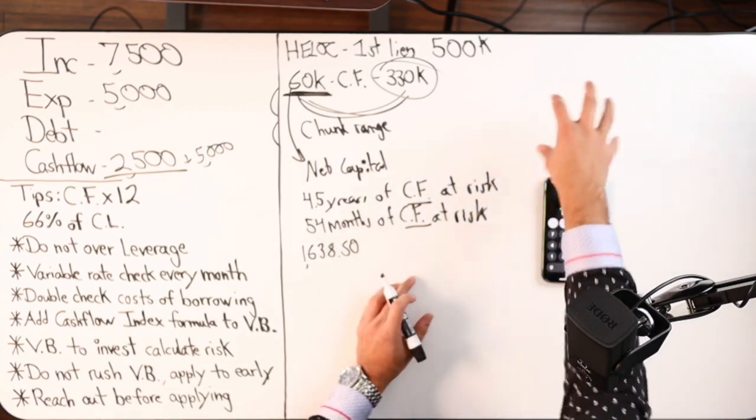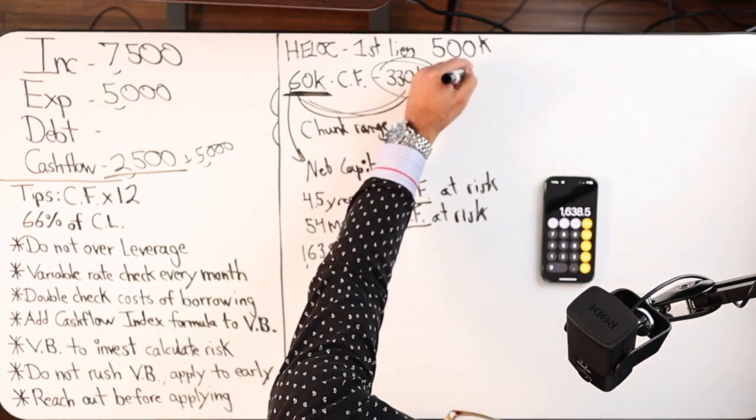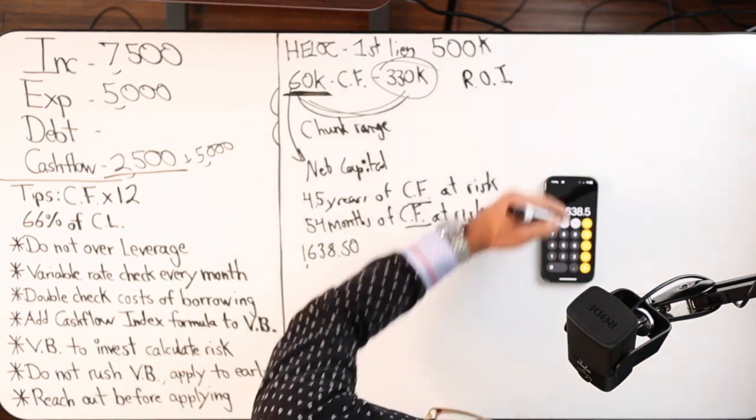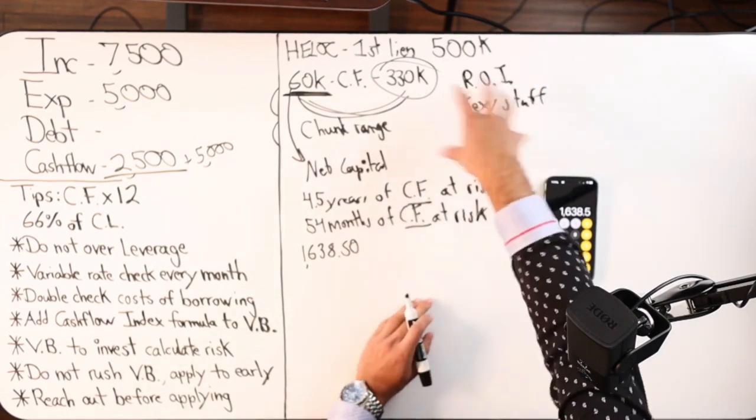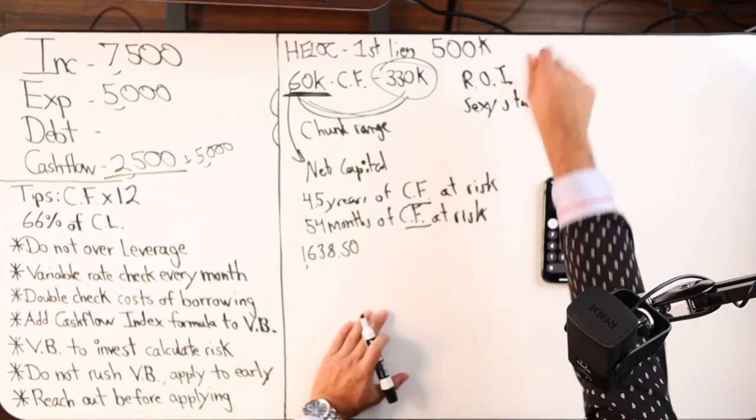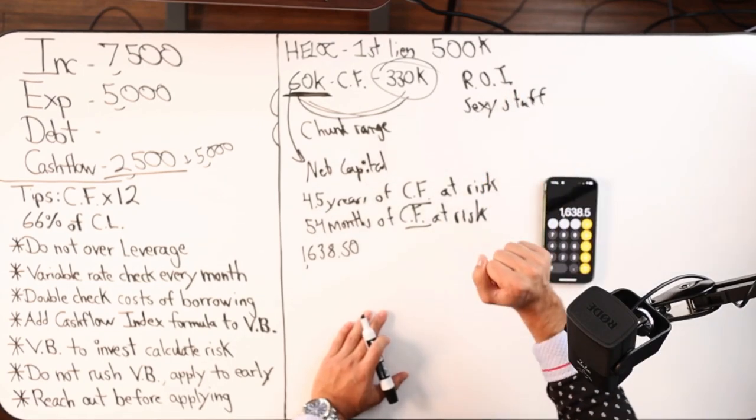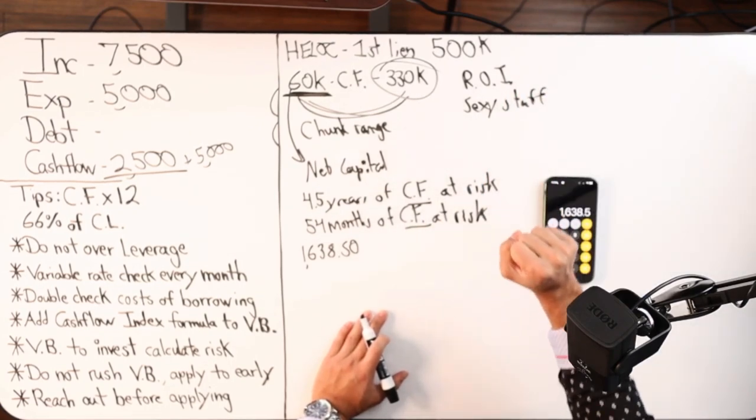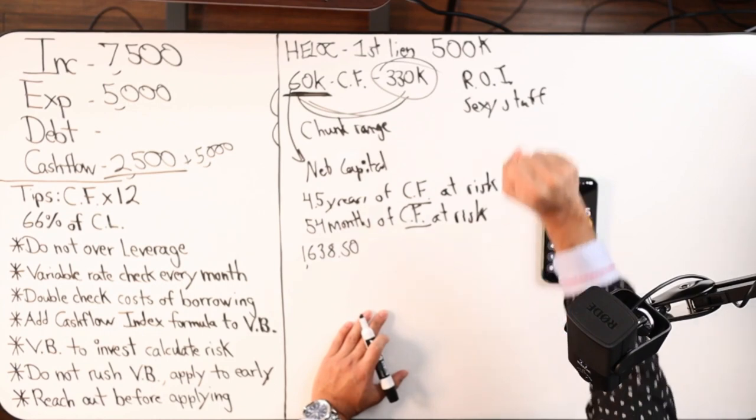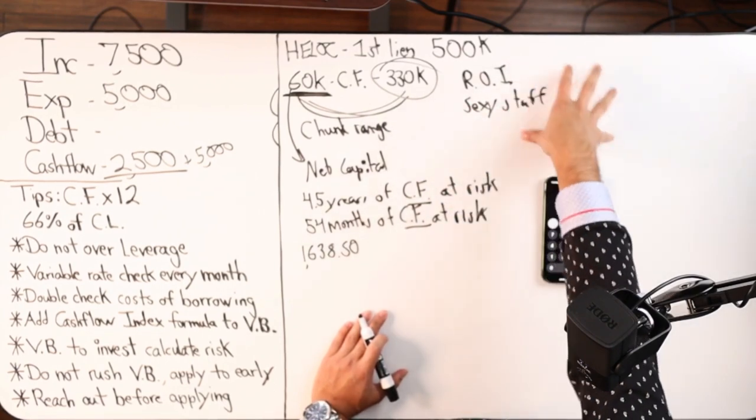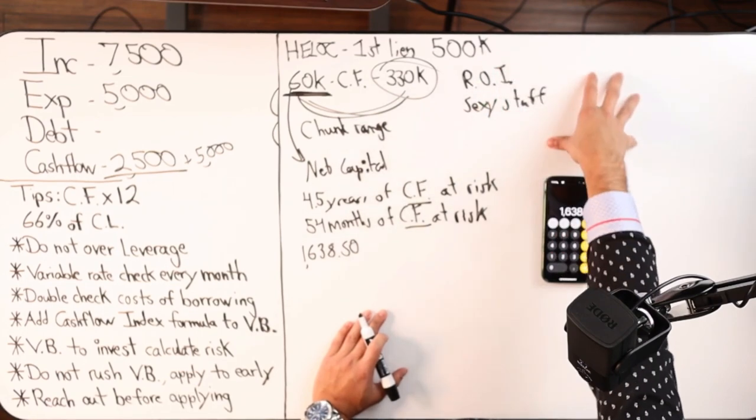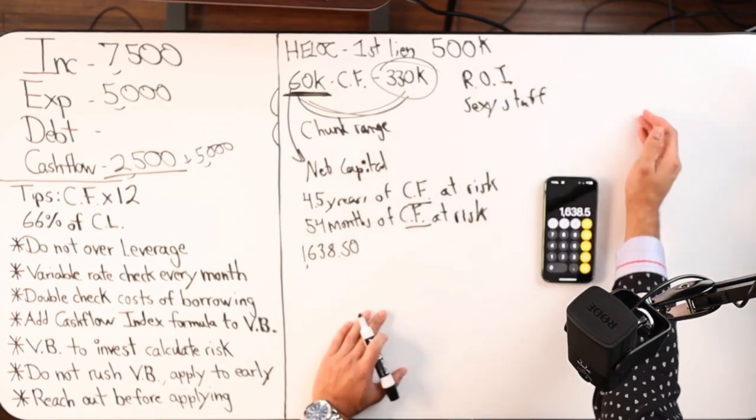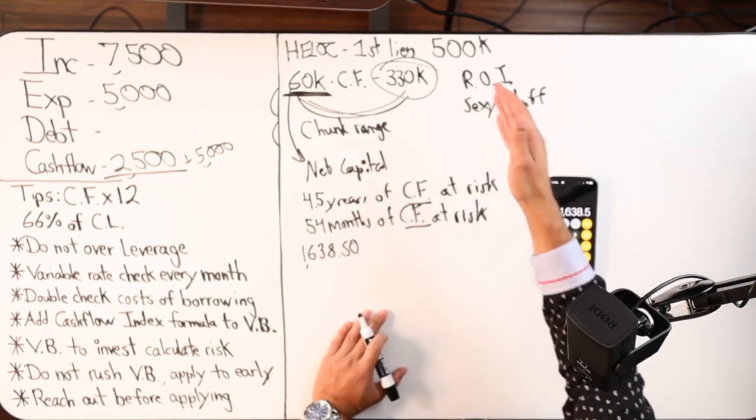You have to ask yourself this. This is important. Because if you're just looking at the ROI, this is the sexy stuff. If you're looking at just the sexy stuff, ROI, tax deduction, asset, compound interest, and all this stuff. That's the sexy stuff. That's what the content creator, the influencer, the financial advisor, whomever is selling you on. That's their job, trying to make money. You need to look at this.